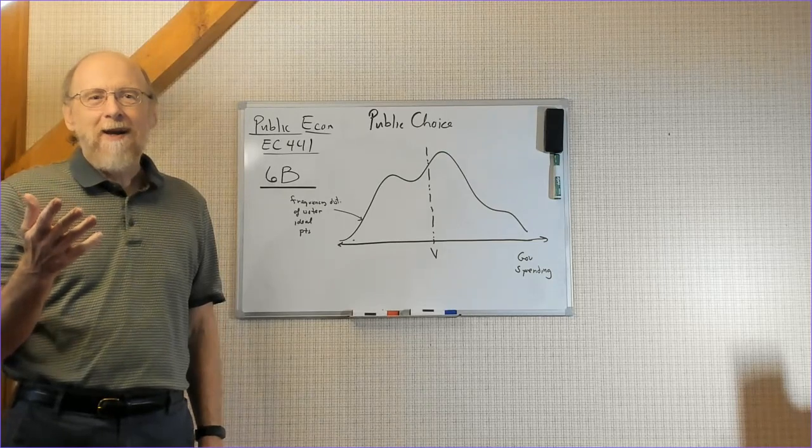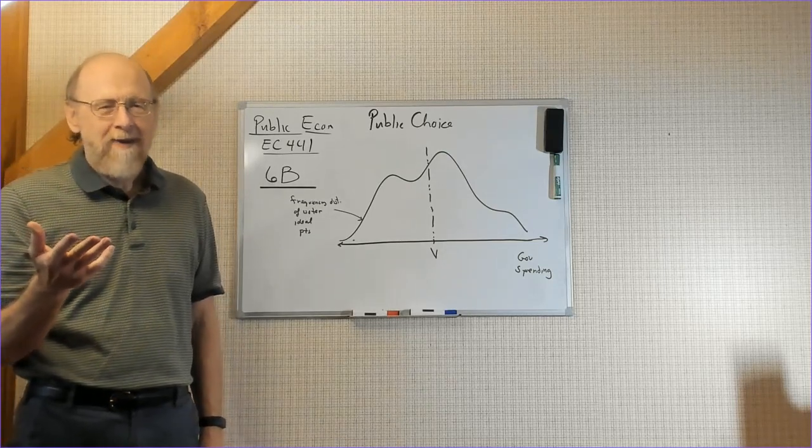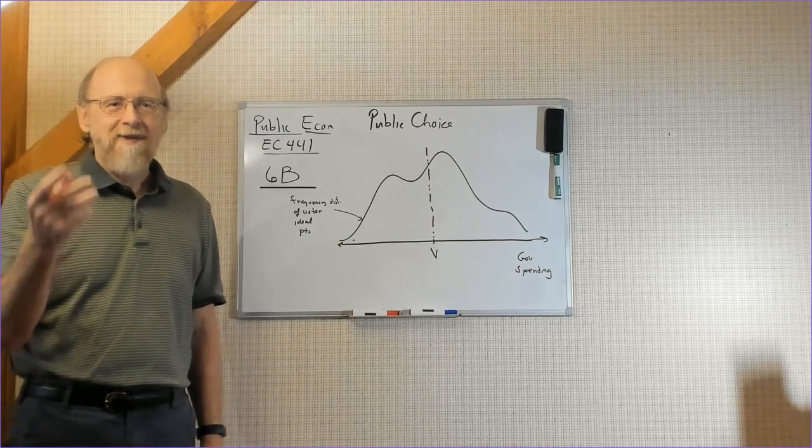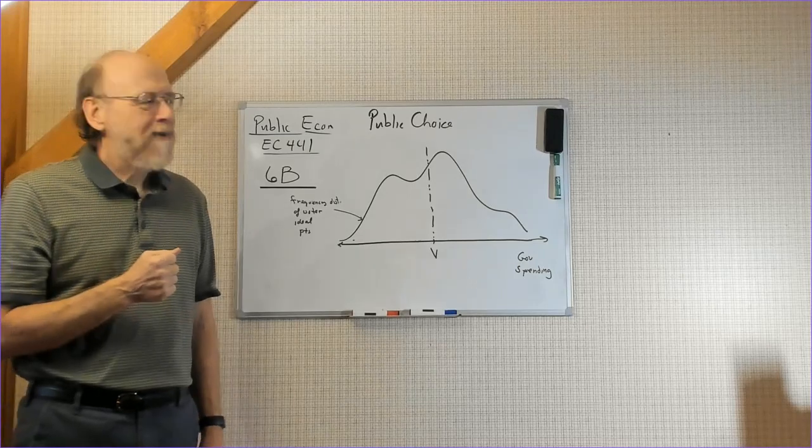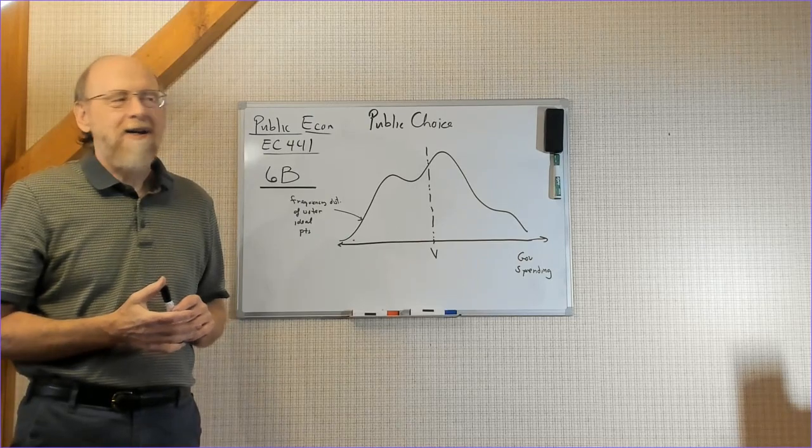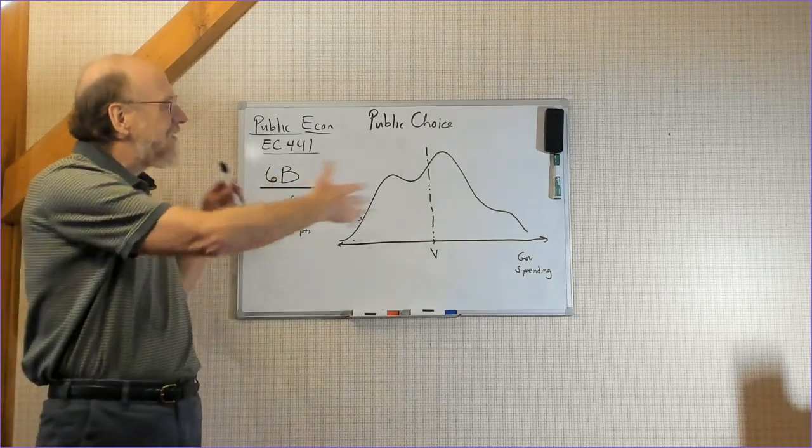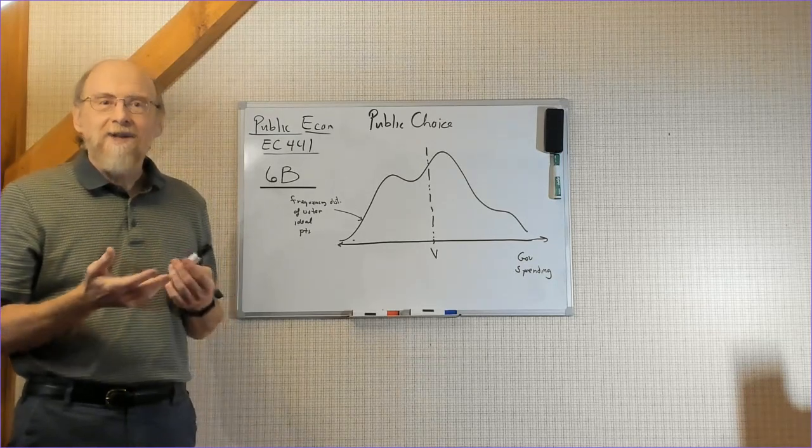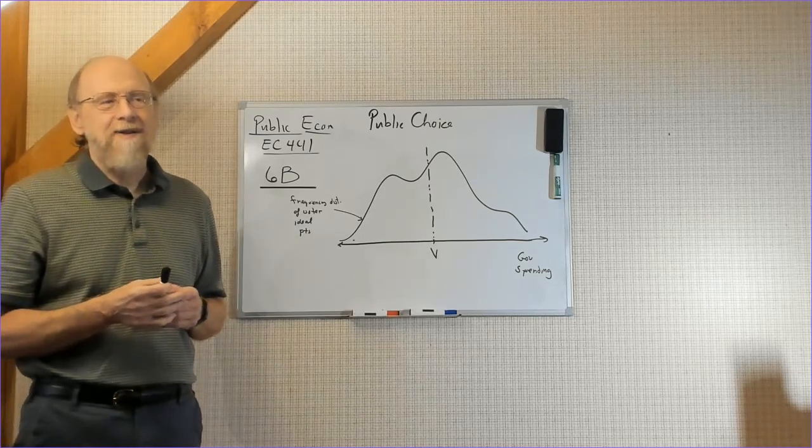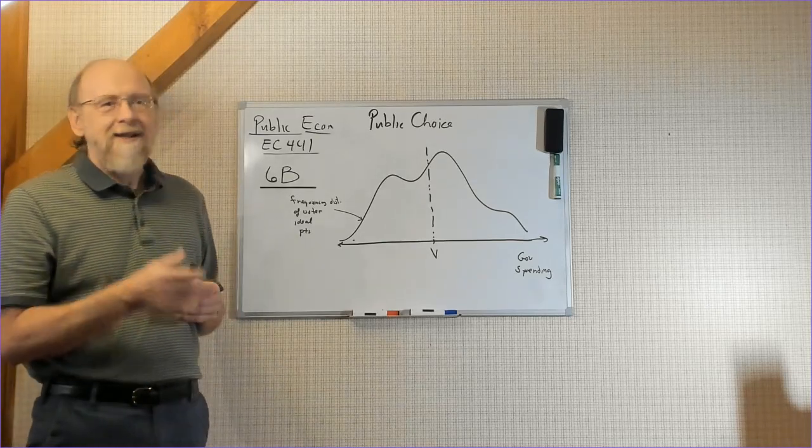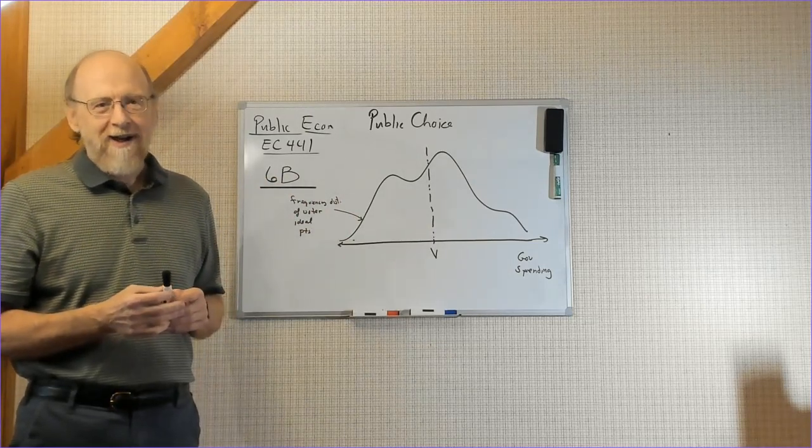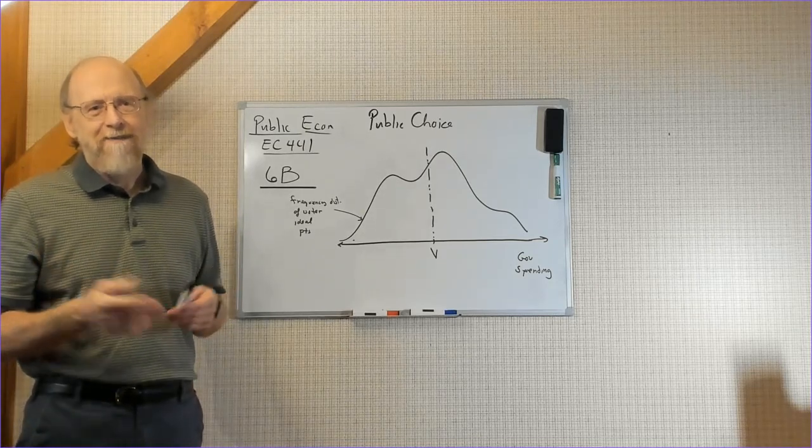I think this kind of distribution is useful because it reminds you that people disagree about public policy. Sometimes the way the newspapers report things, sometimes the way candidates talk, it's as if there are only two types of voters. But in reality, there are all kinds of perspectives on public policies, a continuum of types of policies and a corresponding continuum of voters with ideal points.